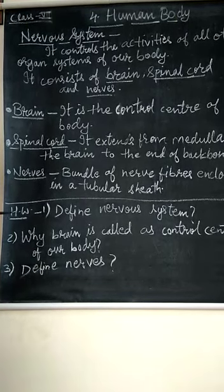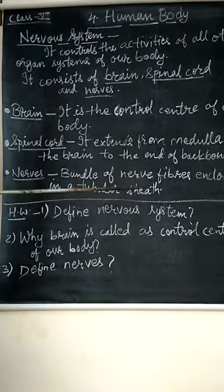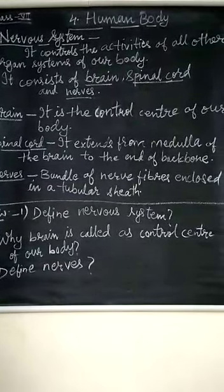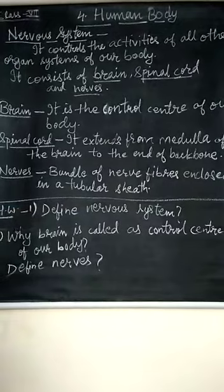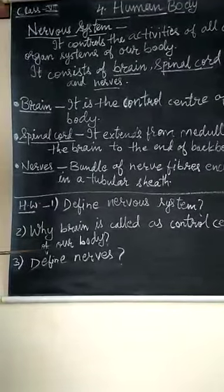Today's homework: define nervous system. Question number two, why brain is called as control center of our body. Question number three, define nerves.